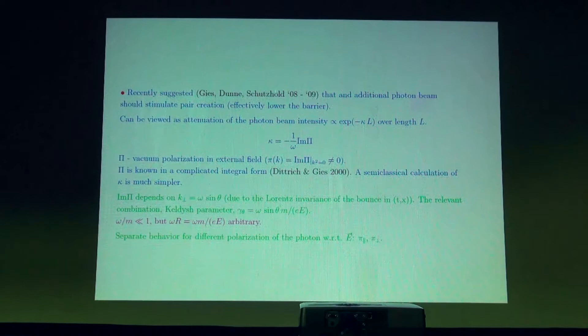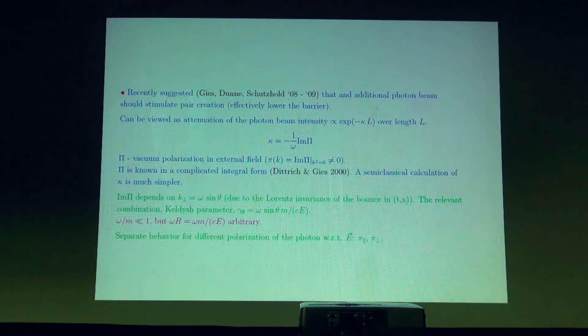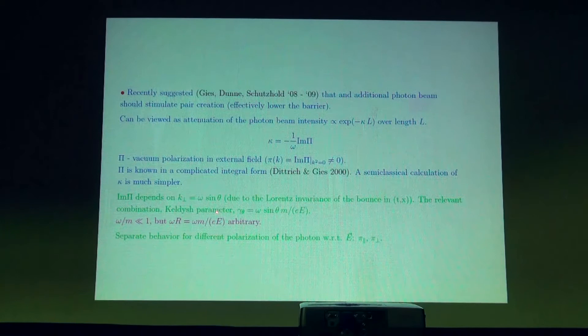In terms of the incident angle theta — the angle between the direction of the incident photon and the field — the relevant parameter is omega times sine theta. This omega sine theta can be compared with different quantities. The parameter for the enhancement is omega multiplied by the biggest distance scale of this problem. The biggest distance scale is the critical length, which is the mass divided by the electric field. This is called the Keldysh parameter.